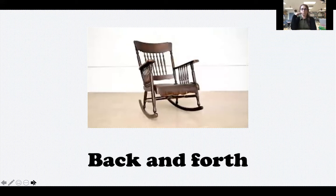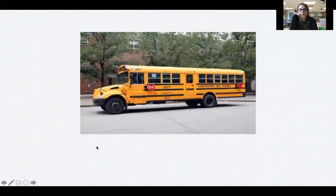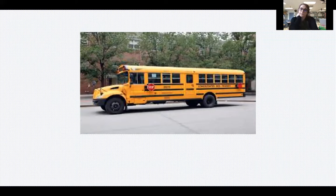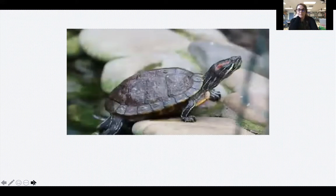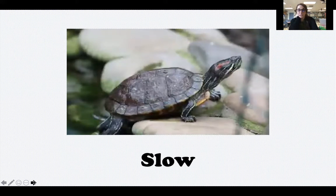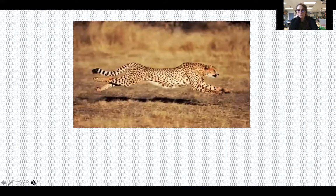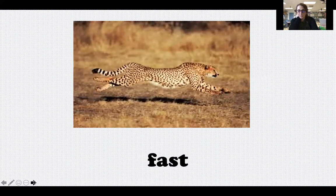Then we have a school bus — I'm thinking in particular about the wheels. How can we describe the way the wheels move on a school bus, a car, a truck, or a bicycle? We could say they move round and round. Then we have a turtle, usually described as moving slow, and a cheetah, usually described as moving fast.